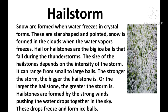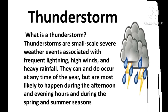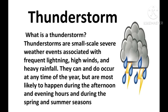Hailstones are the big ice balls that fall during a thunderstorm. Snow is formed when water freezes in crystal forms — these are star-shaped and pointed. Hailstones are formed by strong winds pushing water drops together in the sky, which then freeze and form ice balls. The size of the hailstones depends on the intensity of the storm — the stronger the storm, the bigger the hailstone.